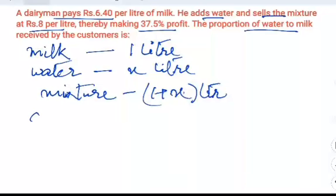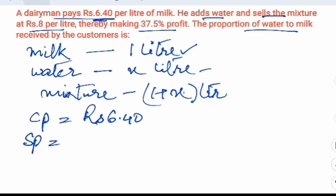The cost price for this mixture is the amount of money he gives for milk because water is free. So for milk he pays 6.40 rupees per liter, so the cost price is 6.40.